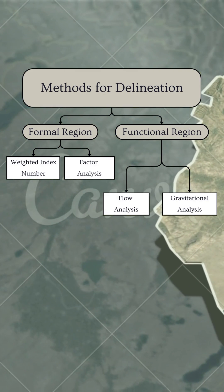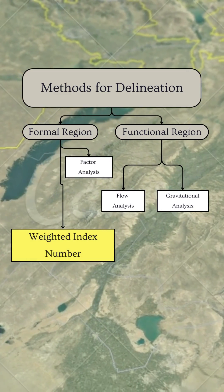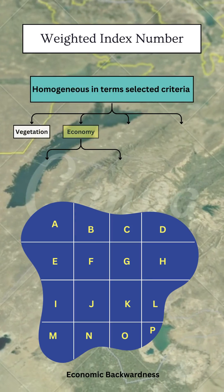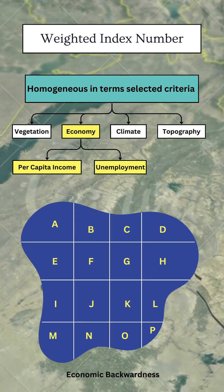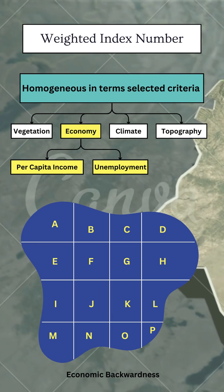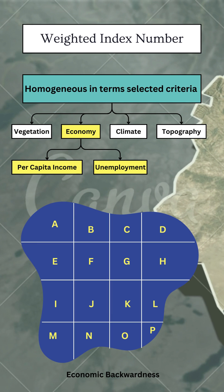Today, we'll discuss the first method: the weighted index number method. In this method, we choose some parameters, like criteria, and give them weights. We calculate the total weights for each part, and areas with similar weights are grouped together. This grouped area is called a region.